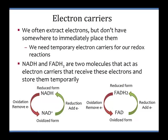These electron carriers act as a way to store those electrons and protect our cells from them. Our two electron carriers that cells use most often in catabolic pathways are NADH and FADH2. We also have another electron carrier called NADPH, used in anabolic pathways such as photosynthesis. We're mostly going to focus on cell respiration, so we'll mostly be using NADH and FADH2.